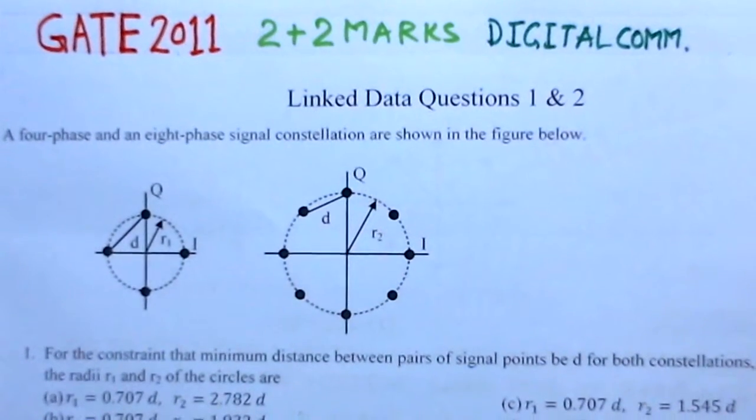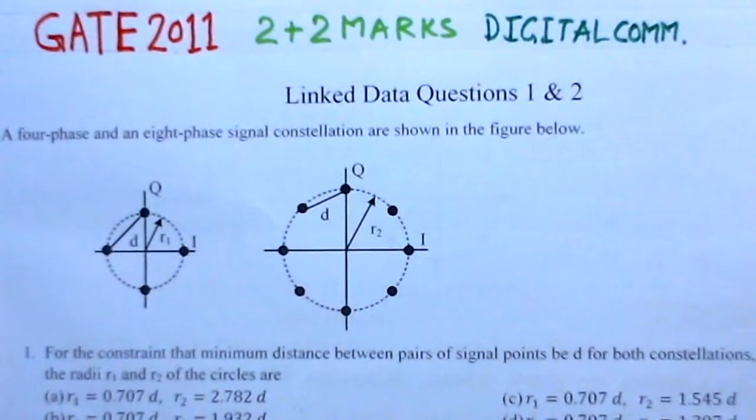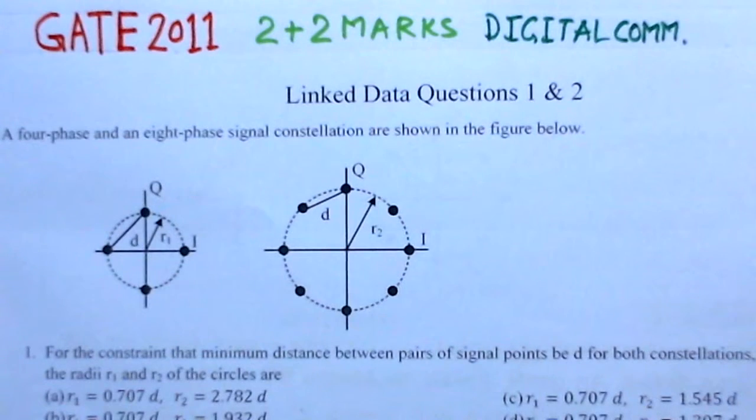This is a very good problem. Let me summarize what this problem is. Basically there are 2 constellations - one is 4-phase and the other is 8-phase. This is 4-phase and this is 8-phase constellation.